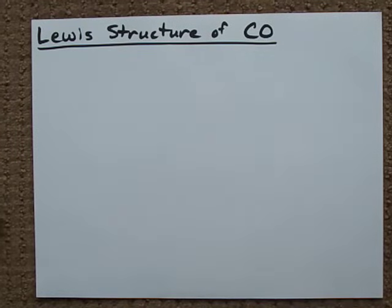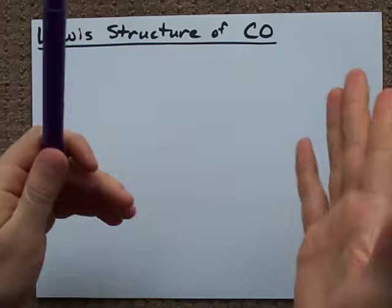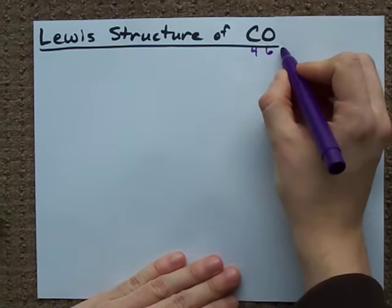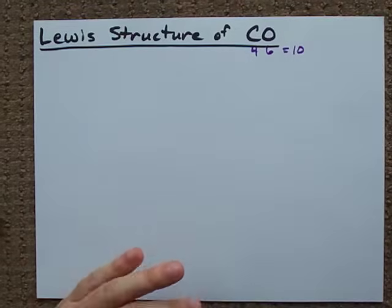All right guys, quickly the Lewis structure of CO. How many electrons does each atom bring with it? Carbon brings four, oxygen brings six, so we need ten electrons total.